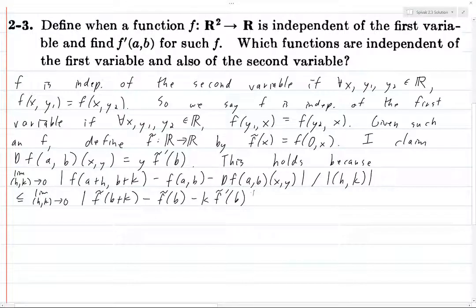I had to flip it because I did it the wrong way when I wrote up the solution, and the reason I have this less than or equal to is because the norm of this vector h comma k, so that's going to be the square root of H squared plus k squared, and that's going to be greater than or equal to just the square root of k squared, which is precisely the absolute value of k. So since it's on the denominator, it becomes less than or equal to.